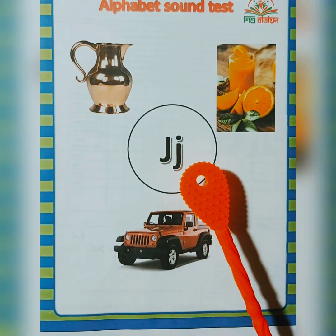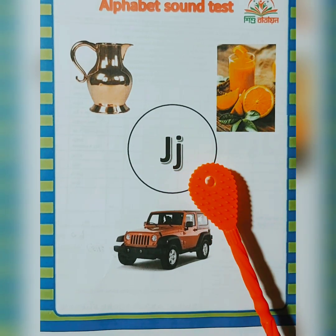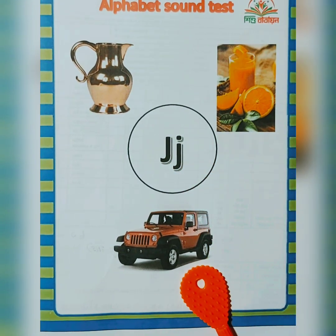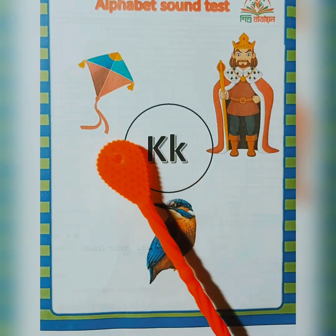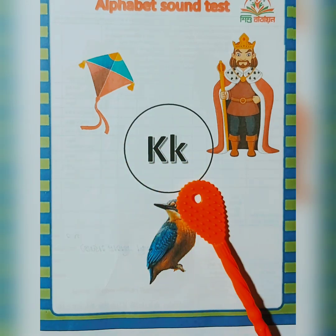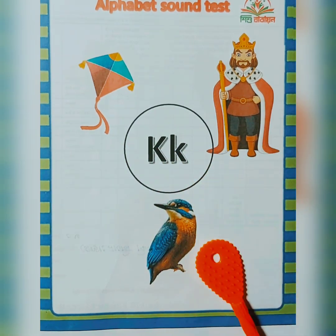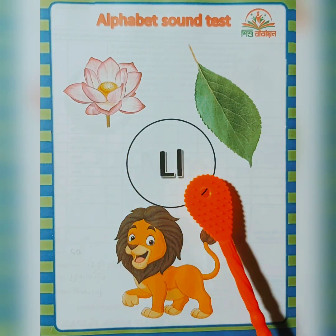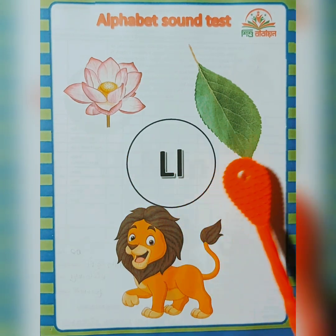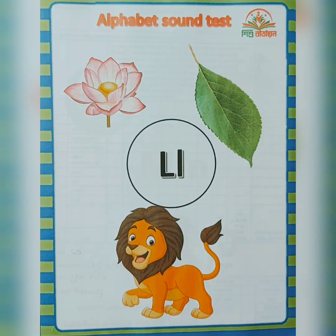J — jug, juice, jeep. K — kite, king, kingfisher. L — lotus, leaf, lion.